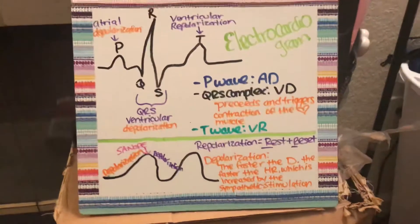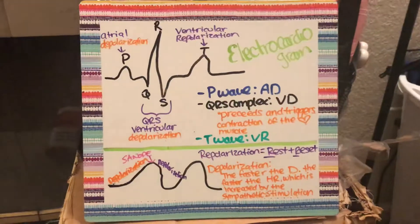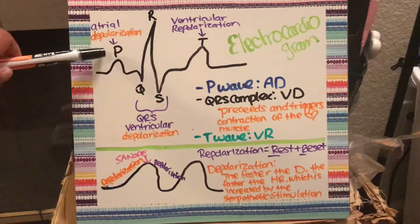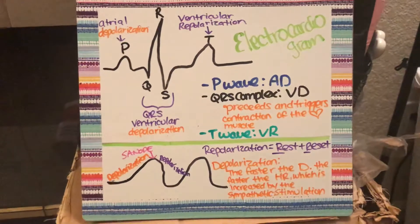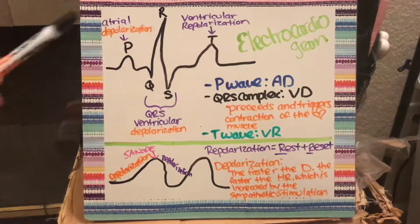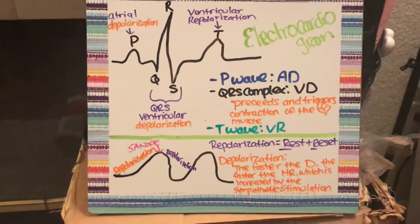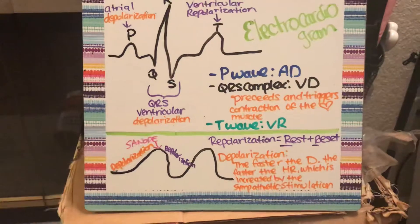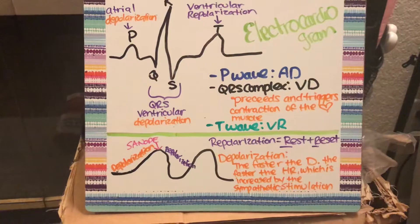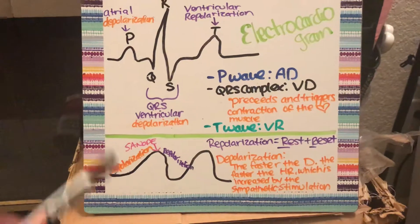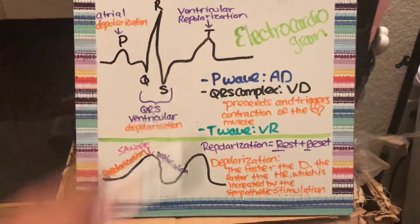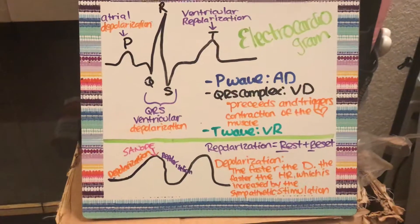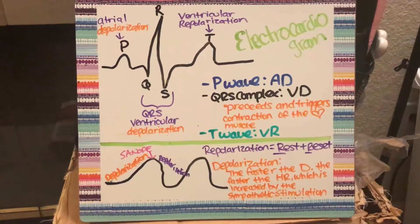To recap: your P wave is atrial depolarization, your QRS is ventricular depolarization, and your T wave is ventricular repolarization.